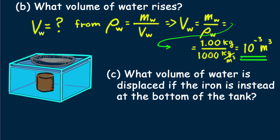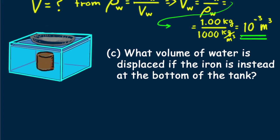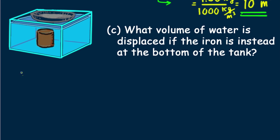Part C. What volume of water is displaced if the iron is instead at the bottom of the tank? Again, we focus on what we're looking for. V_w equals what? Well, the volume of water displaced is the same as the volume of the iron. No need to even think of buoyancy here except to say it's less than the weight of iron.